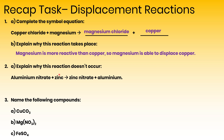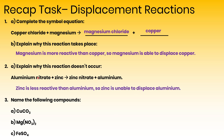Next up we've got a reaction which shouldn't occur: aluminium nitrate plus zinc goes to make zinc nitrate plus aluminium. We're asked to explain why it doesn't happen. Zinc is actually less reactive than aluminium, so zinc would be unable to displace aluminium from aluminium nitrate.